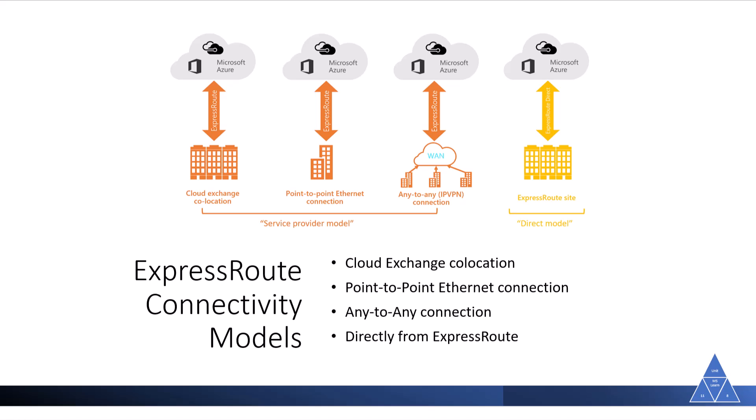ExpressRoute supports four models that you can use to connect your on-premises network to the Microsoft cloud: cloud exchange co-location, point-to-point ethernet connection, any-to-any connection, and directly from ExpressRoute. Co-location at a cloud exchange: when the data center is physically co-located at a cloud exchange such as an ISP, you can request a virtual cross-connect to Microsoft cloud.